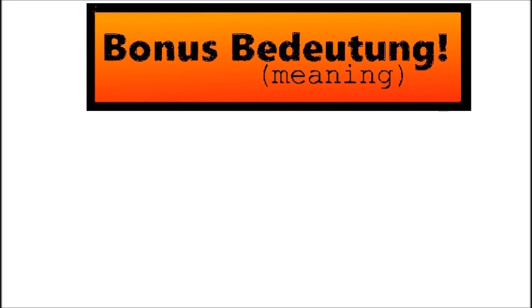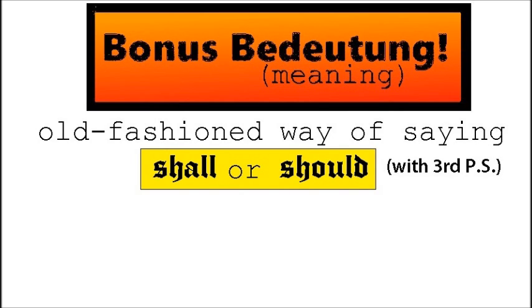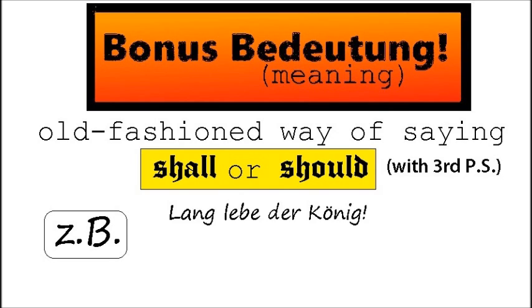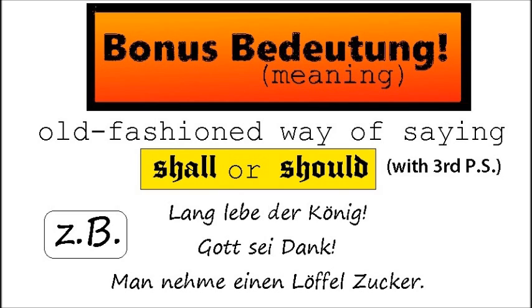Bonus meaning: The Konjunktiv 1 has another meaning in combination with the third person singular — it is an old-fashioned way of saying 'shall' or 'should.' You might see it in old phrases like 'Lang lebe der König' — 'Long live the king,' meaning 'the king shall live long.' Or 'Gott sei Dank' — 'Thank God,' meaning 'we should thank God.' It is also used in old recipes: for example, 'Man nehme einen Löffel Zucker' — 'You should take one spoon of sugar.'